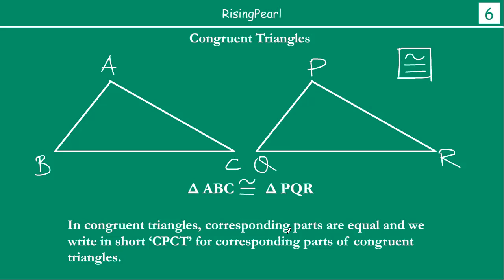In congruent triangles, corresponding parts are equal. This is very important to understand: if two triangles are congruent, it means the corresponding parts — A corresponds with P, B corresponds to Q, C corresponds to R — are equal. In short, we call this CPCT: Corresponding Parts of Congruent Triangles. Corresponding sides and corresponding angles must be equal. Hopefully you are following along — in the next video, thank you.